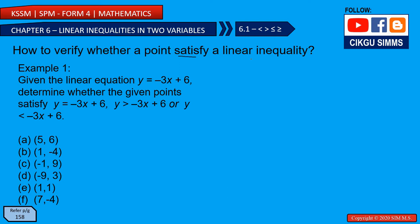What is the meaning of satisfying a linear inequality? For example, x is greater than 5. This is the linear inequality. If I say x is 4, that means it does not satisfy this linear inequality, because x must be greater than 5. So that means x must be 6, 7, 8, or so on. If I say x is 8, then 8 is greater than 5, so it satisfies the linear inequality. We need to verify whether it satisfies a linear inequality or not.